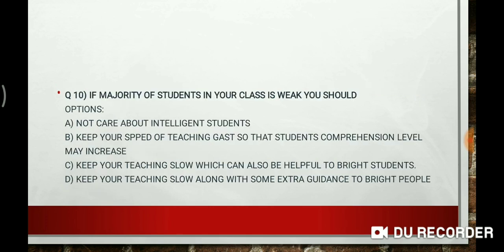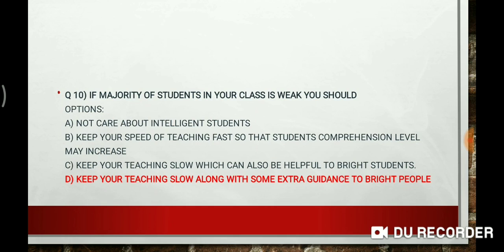Question 10. If the majority of students in your class are weak, you should: not take care of intelligent students; keep your speed so fast that students' comprehension level may increase; keep your teaching slow which can also be helpful to bright students; or keep your teaching slow along with some extra guidance to bright students. The right answer is D — keep your teaching slow along with some extra guidance to bright students, because we have to take care of all kinds of students whether they are weak or intelligent.